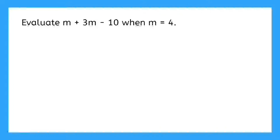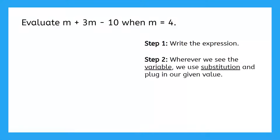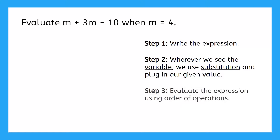For the next example, I'm going to show you three simple steps that will help us evaluate expressions with one variable. Step 1: write the expression in your own handwriting. Step 2: wherever you see the variable, use substitution and plug in the given value. Step 3: evaluate the expression using order of operations.